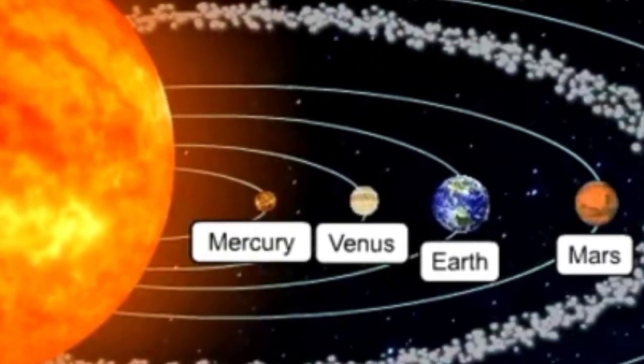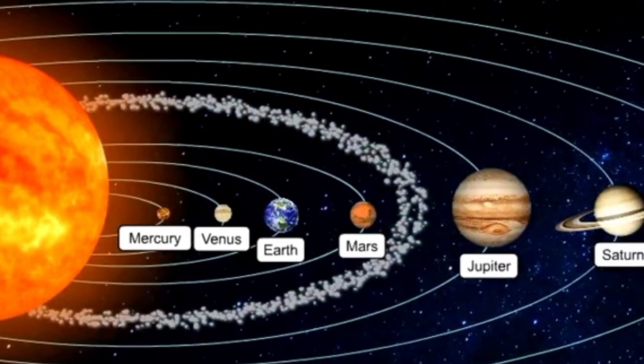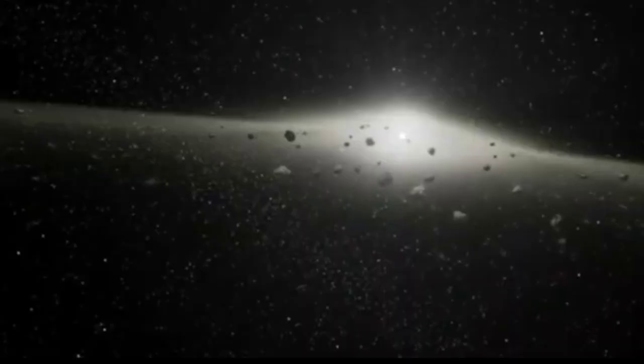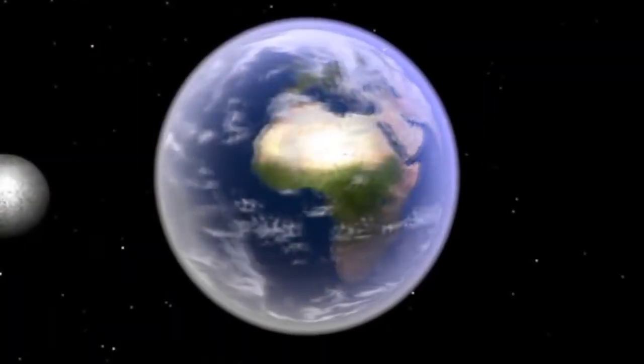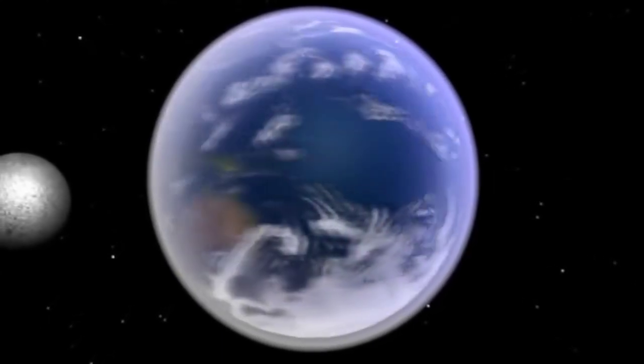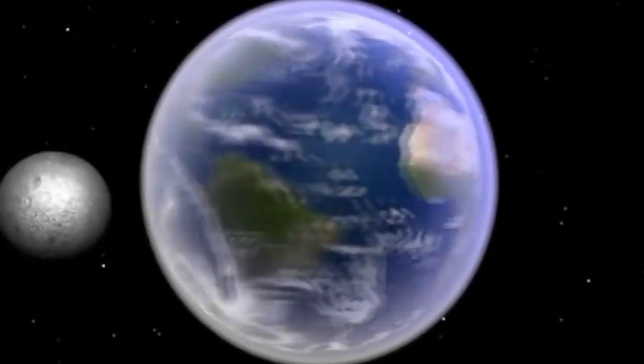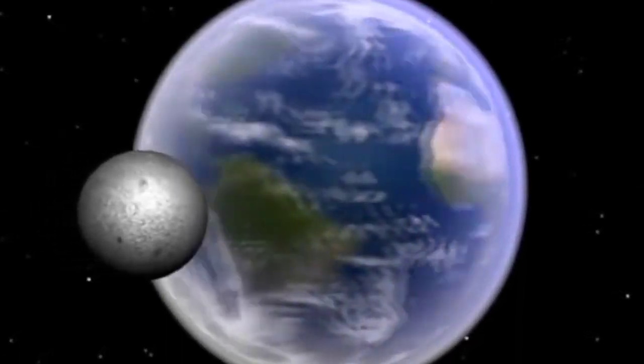Our solar system is made up of our sun and the eight planets, some dwarf planets, asteroid belts and meteors, and also natural satellites, means heavenly objects those revolve the planets. Our moon is among them, which revolve around the planet Earth.